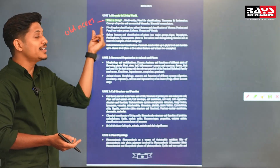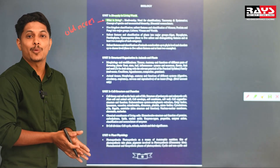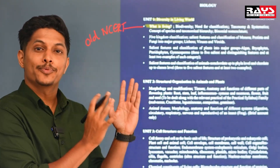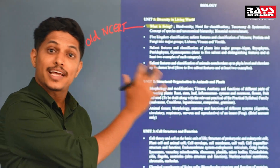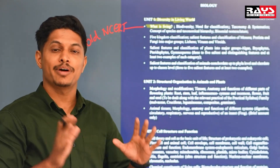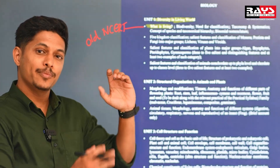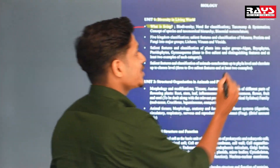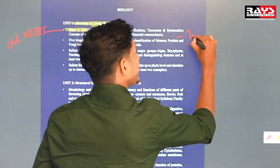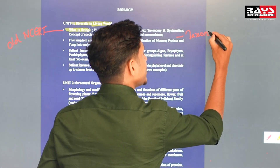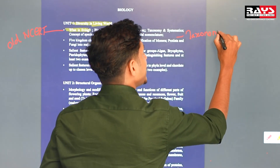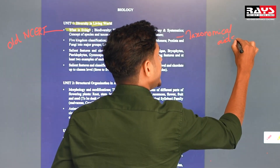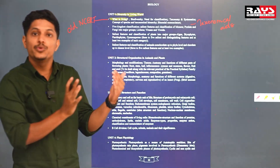What is living? — from old NCERT. The main topics of the living world chapter include taxonomy hierarchy, binomial nomenclature, and taxonomical aids. Taxonomical aids such as museum and herbarium are deleted as per the new NCERT.